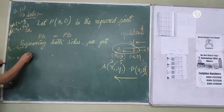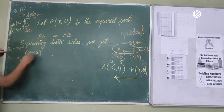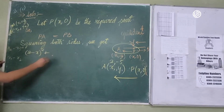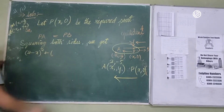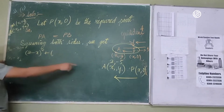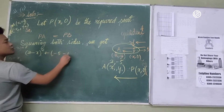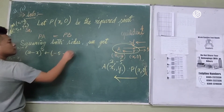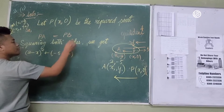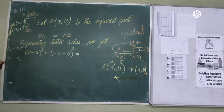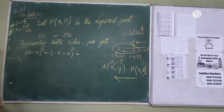2 minus x, holding square, plus minus 5 minus 0, holding square, is equal to 3 minus — sum of 8 minus 7 minus 8 minus 9 minus 1.